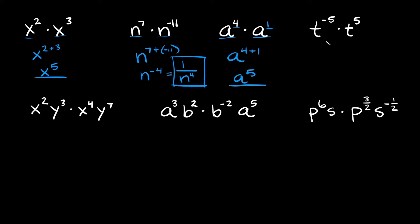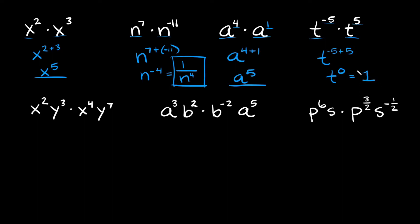Now this last single-variable one: t to the negative 5 times t to the positive 5. You have a t and a t, so you keep the t and add the exponents. Negative 5 plus 5 equals 0, giving us t to the 0. Remember, anything raised to the 0 power is equal to 1, so your actual simplified answer would be 1.